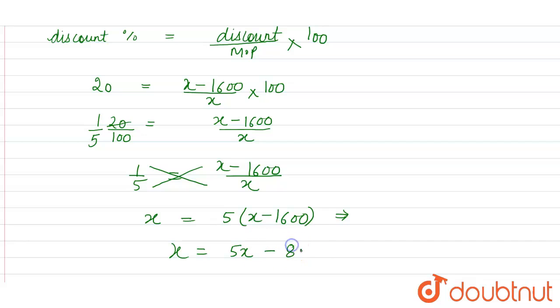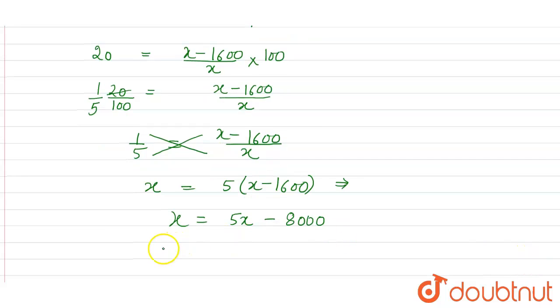So 16 into 5 is 80, so 8000. Now we'll transfer the negative 8000 to the left hand side, so it will become positive 8000. And 5x here, we are transferring the x, so this is equal to 5x minus x is 4x.